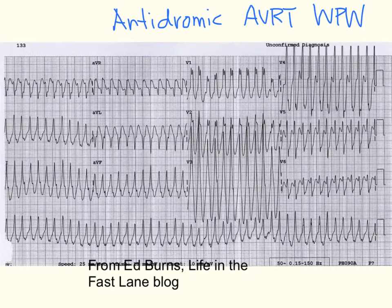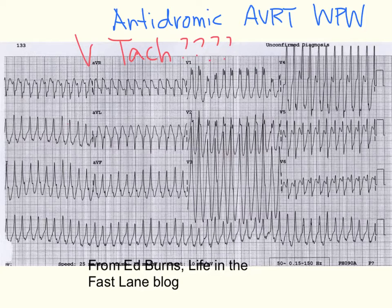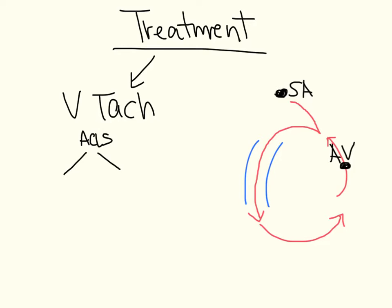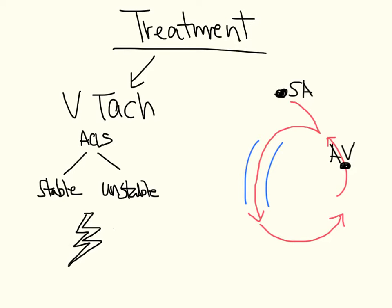The problem is that another potentially dangerous rhythm also looks like this — fast, wide, and regular — and that would be ventricular tachycardia. Without knowing exactly whether the patient has Wolff-Parkinson-White or not, this has to be presumed to be ventricular tachycardia. Therefore, in terms of treatment, we presume VTAC first and follow the regular ACLS algorithm, deciding whether the patient is stable or unstable, ultimately likely using electrical cardioversion, since that will also reset this loop.